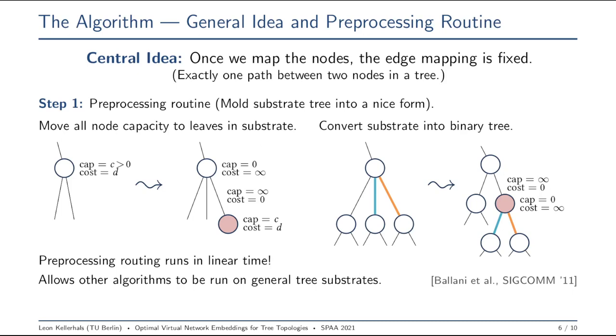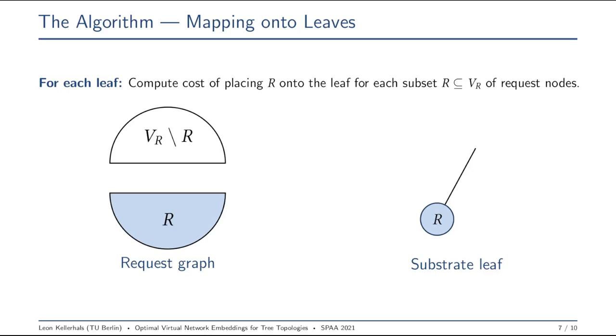Step two of our algorithm is based on a dynamic programming approach and it works on the substrate tree and works itself from the leaves bottom up to the root of the tree. So how does this work in more detail? As I said, bottom up, and we do the following for every leaf.